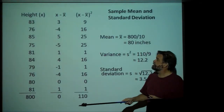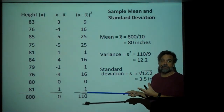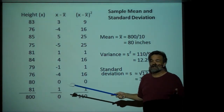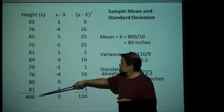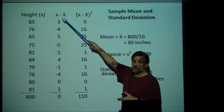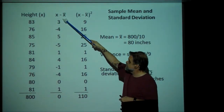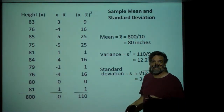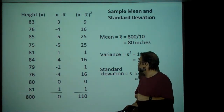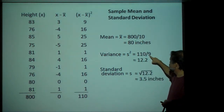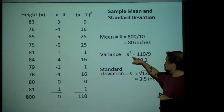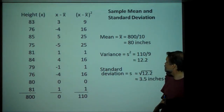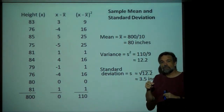As it turns out, here we have the exact same calculations, except for a sample instead of a population. Calculating the sample mean is exactly the same, the differences between each data point and the sample mean are exactly the same, and when we sum up the squares of those differences it's exactly the same. The only difference is right there: when calculating sample variance, instead of dividing by n, you divide by n minus one — one less.